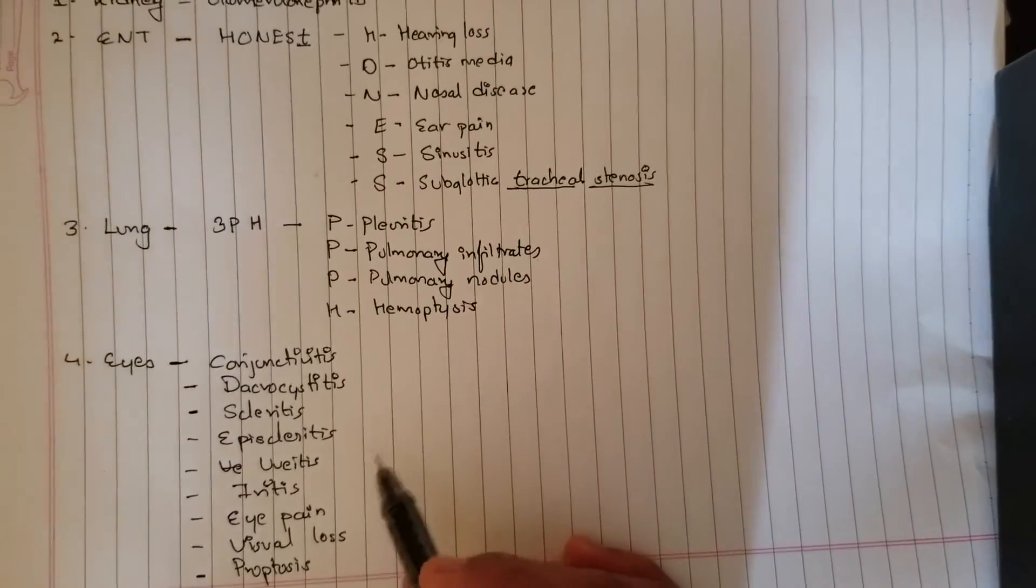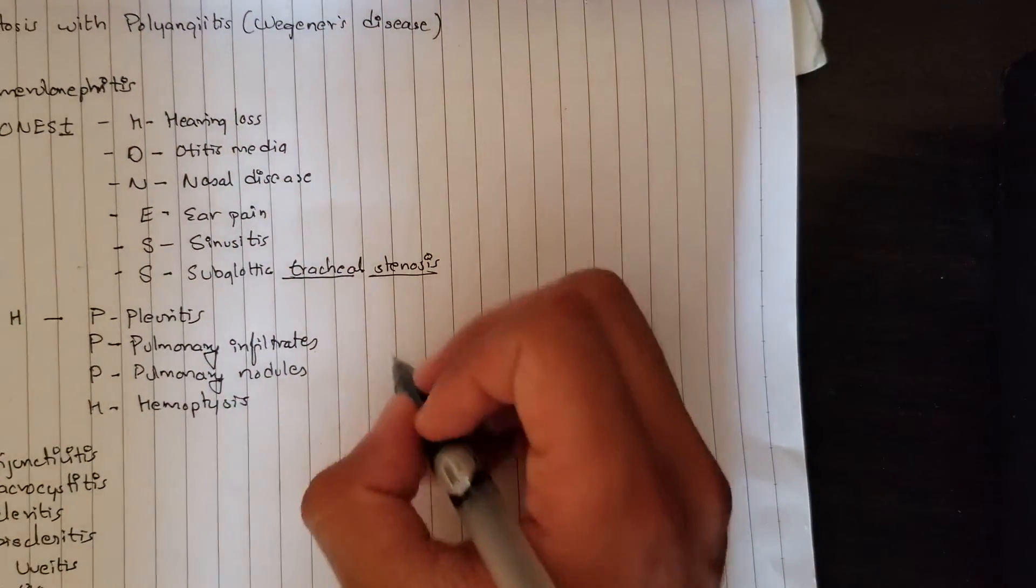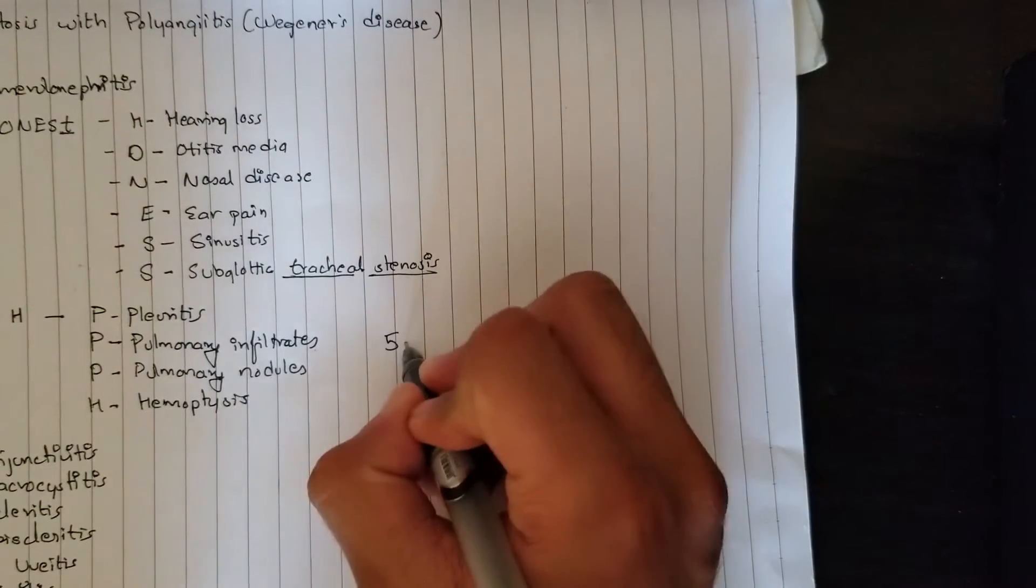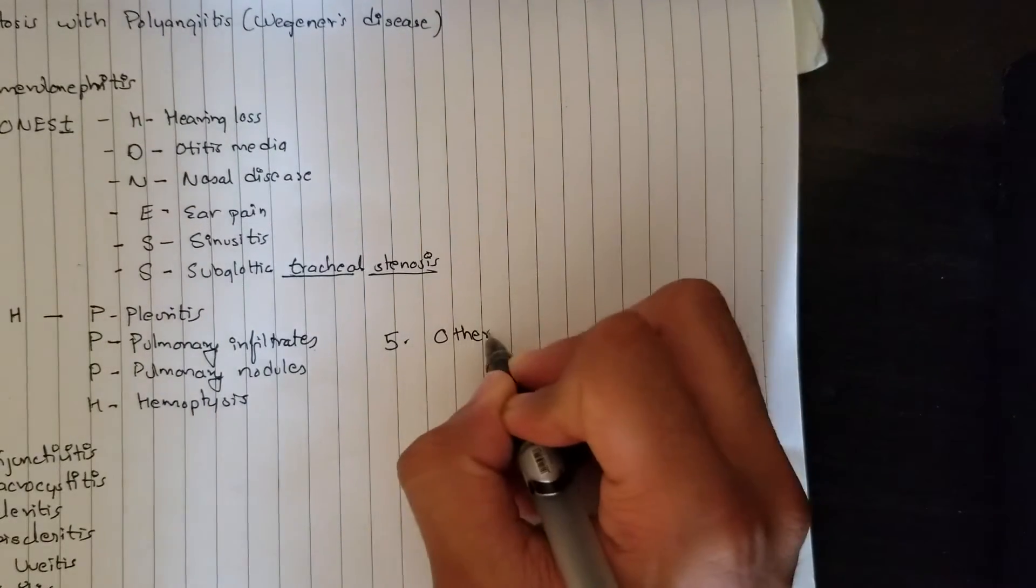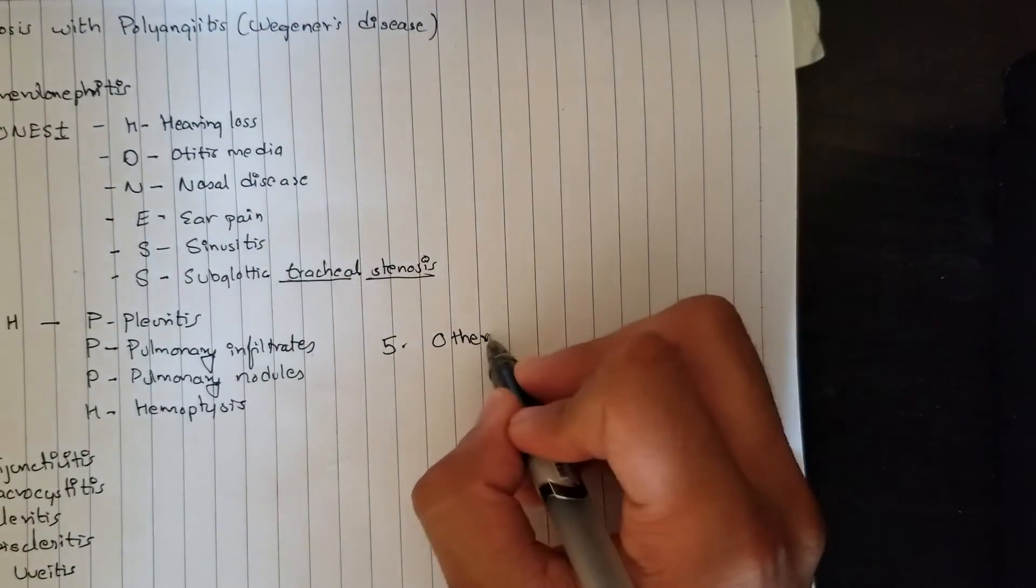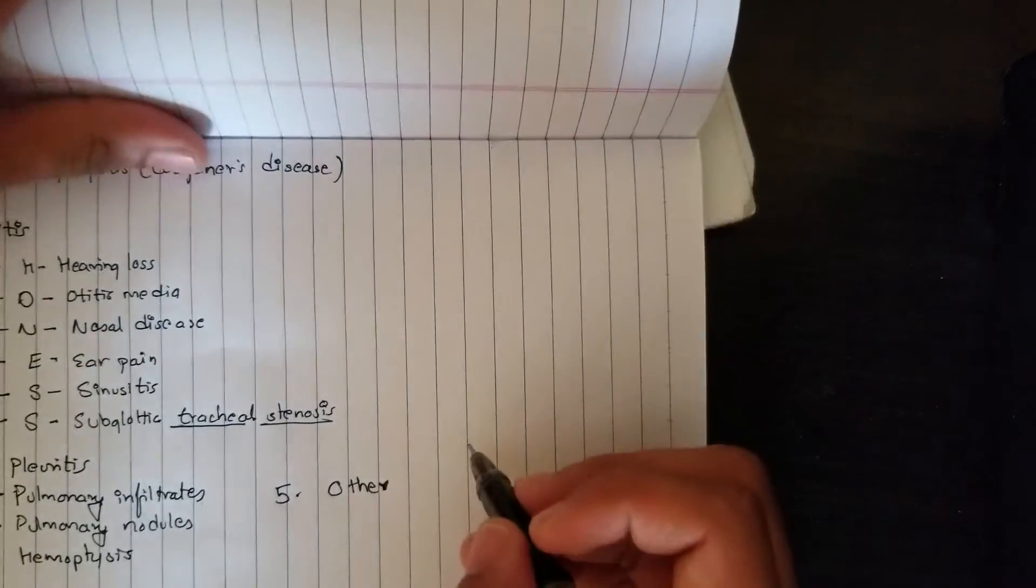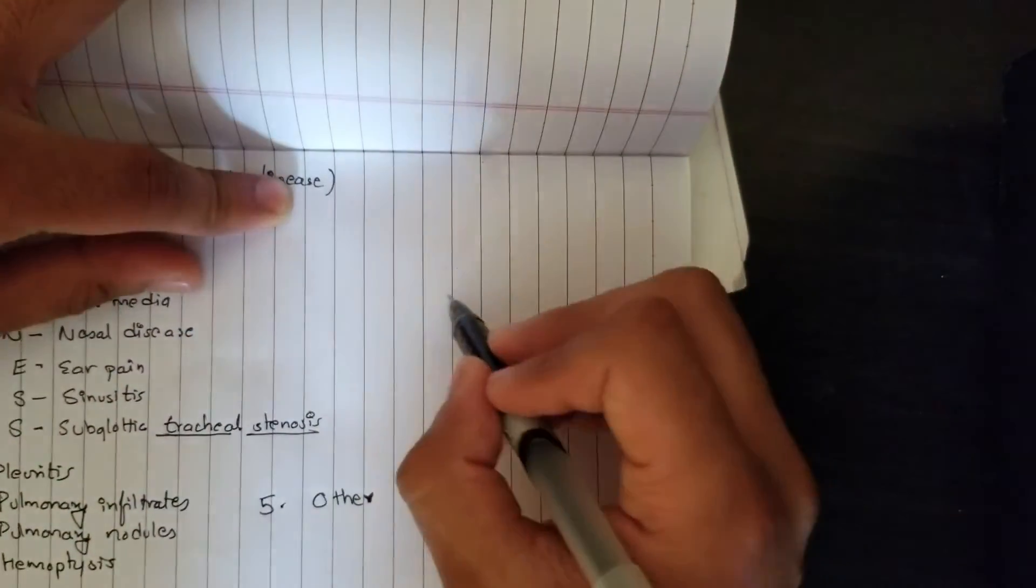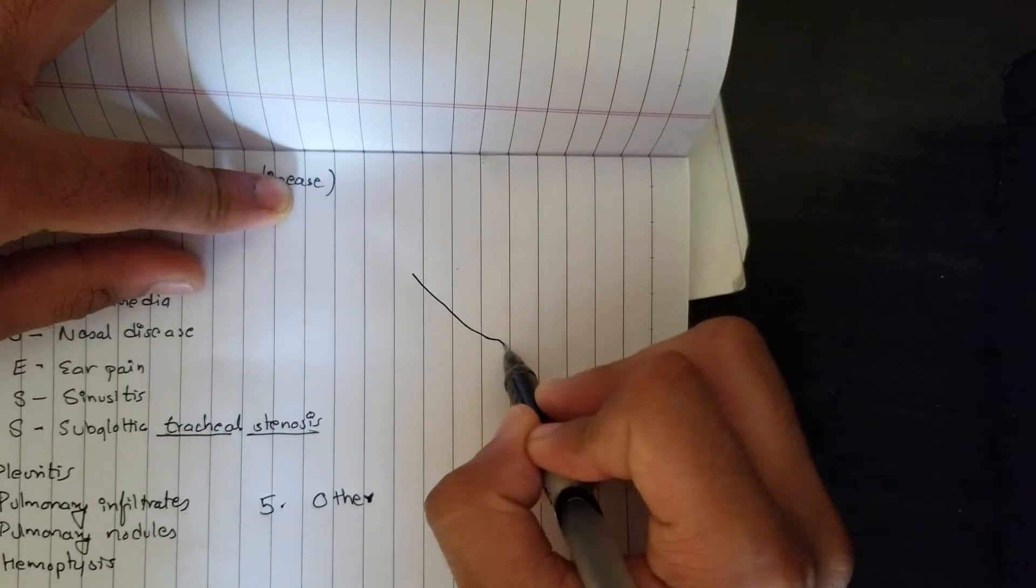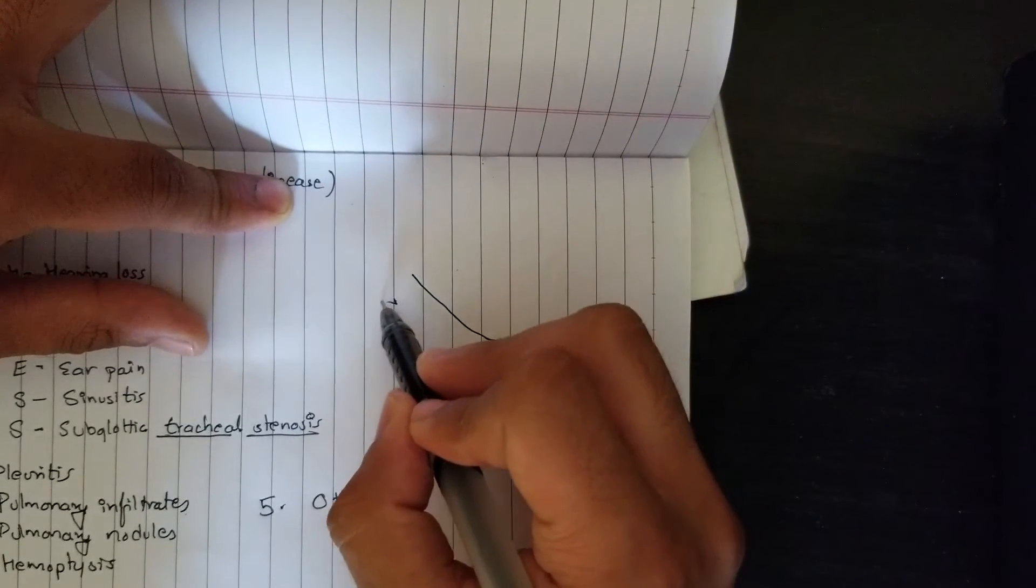These are all the manifestations in the eye. Now let's go to the last part, number five, in the other manifestations. Here I have created a nice visual mnemonic.